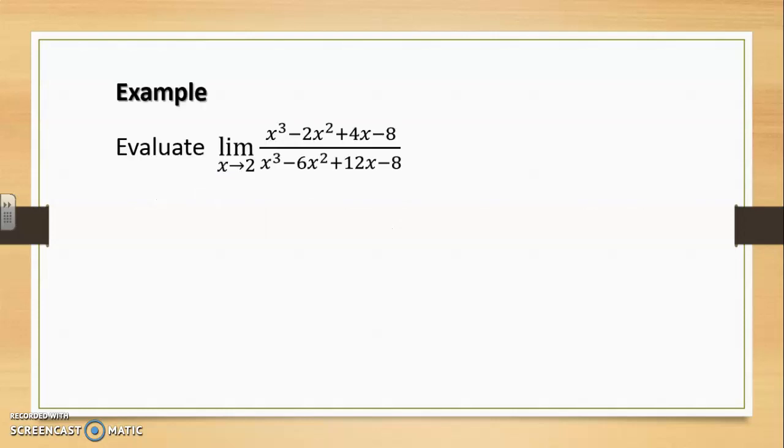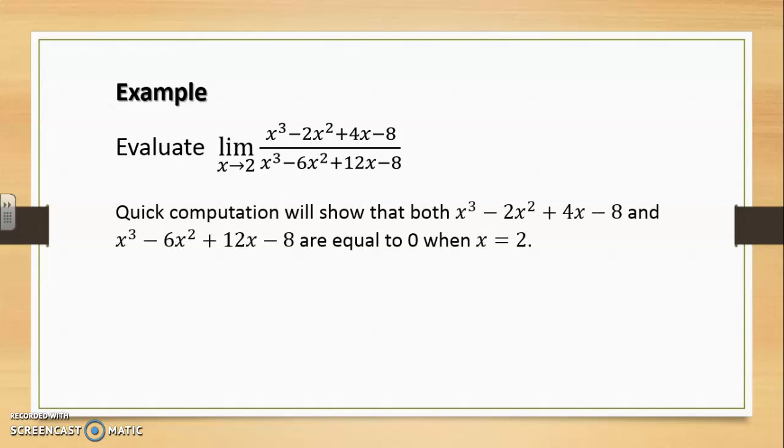The second example: we have a limit as x approaches 2 of the quotient of 2 cubic expressions, x cubed minus 2x squared plus 4x minus 8, and at the denominator x cubed minus 6x squared plus 12x minus 8. Once again, if you try direct substitution, you will find a 0 outcome for both the numerator and the denominator when x is replaced by 2. So once again, we are faced with a 0 over 0 form after applying direct substitution.